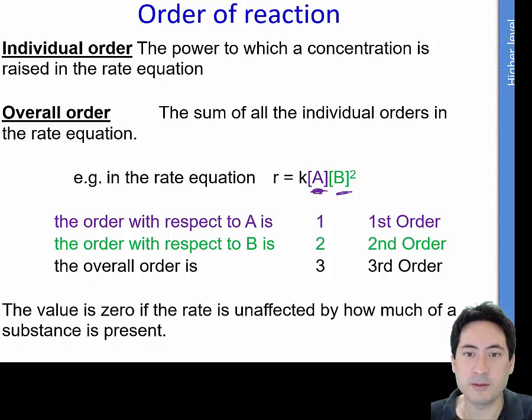And for B it's second order. So if you increase A, double A, the reaction will double. If you double the concentration of B, the reaction will quadruple. So it's second order with respect to B. The overall order is the other terminology, and that's the total order. So add up all those little orders here, and you'll get a 3, so it's third order.